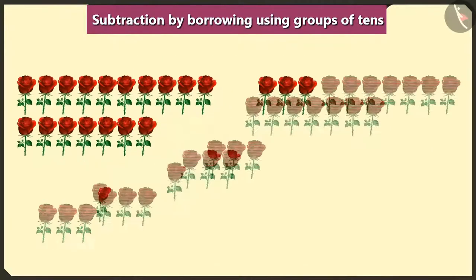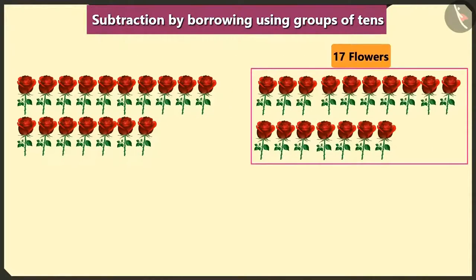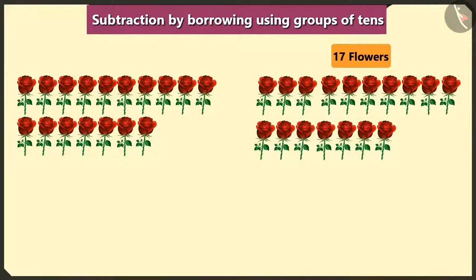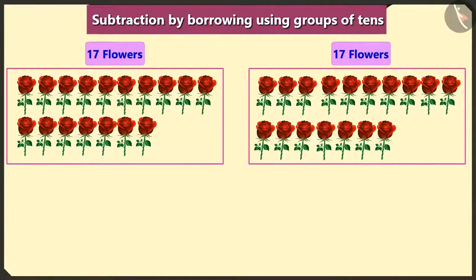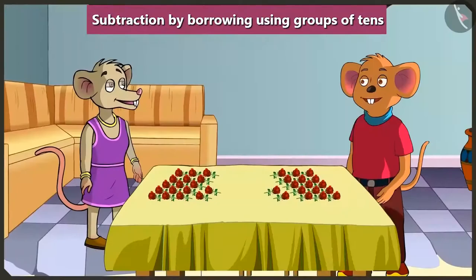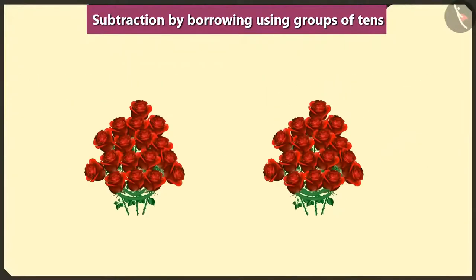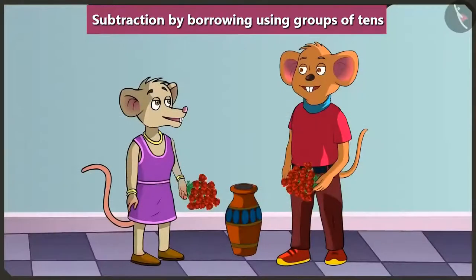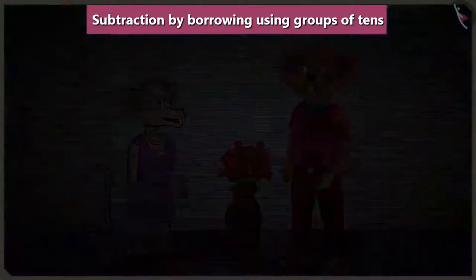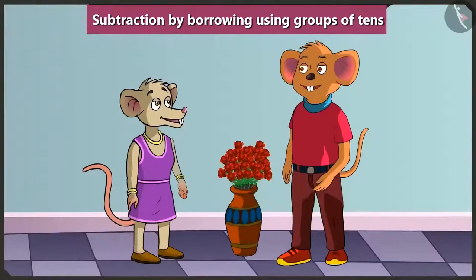If I make a bouquet with 17 flowers from 34 flowers, then you too will have 17 flowers left to make a bouquet. We would have the same number of flowers! Let's both make a bouquet by taking all our flowers together. These beautiful bouquets are ready. Let's put these in that flower vase. It looks beautiful!